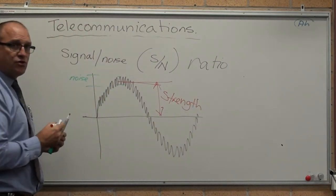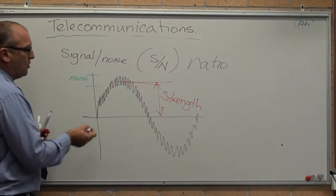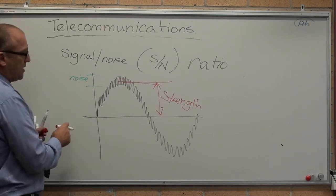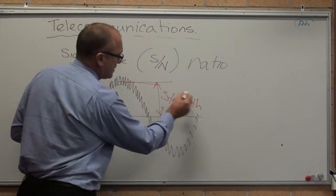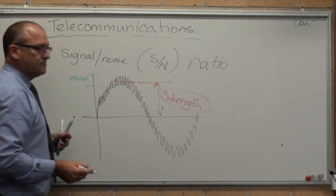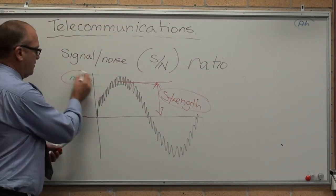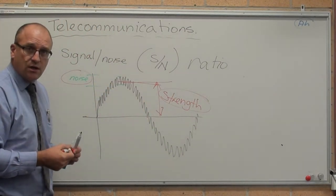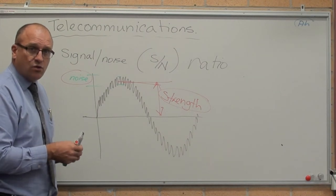So the signal-to-noise ratio is basically what's the signal divided by what's the noise. You clearly want as little noise as possible.